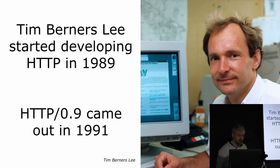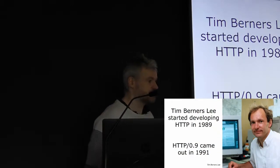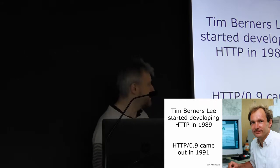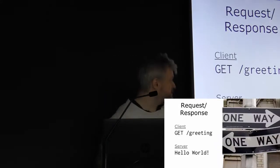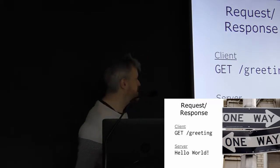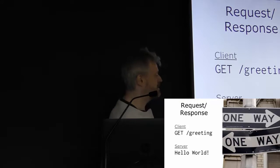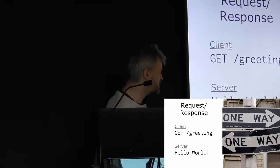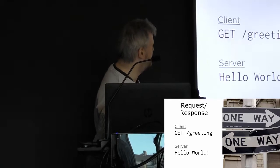The story is that HTTP was initially started in 1989 and eventually came out in 1991. We now know that version as 0.9, but at that point it didn't really have a version number — when 1.0 came out, they invented the version number 0.9 to refer to the old one. The first 0.9 version was very simple: you just opened a TCP connection, sent a single line of text — GET and the name of a resource — and the server sent back that resource and closed the connection. The protocol was as simple as it could possibly get.